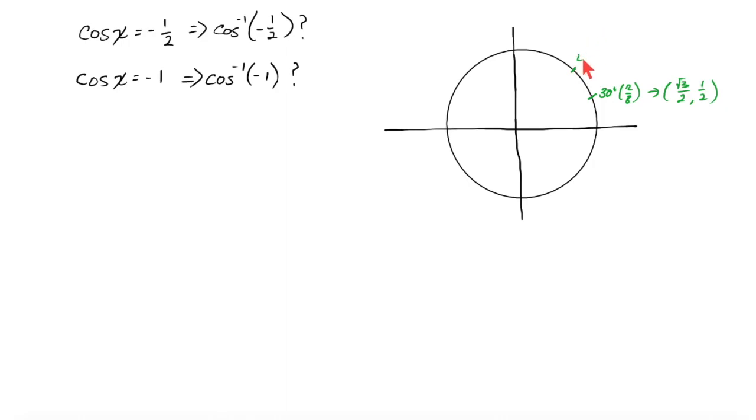I also have to know about how 45 degrees, which is pi over 4, leads me to the coordinate root 2 over 2, root 2 over 2. And I have to know about 60 degrees, which is pi over 3.